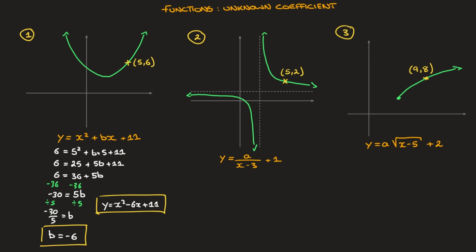Let's work through this second example. We're given this graph and its equation is y equals a over (x minus 3) plus 1, and we need to find this unknown coefficient a. Looking at the graph, we can see the coordinates of a point — it has coordinates (5, 2). So to find a, all I have to do is replace any x by 5 and y by 2, then solve for a.